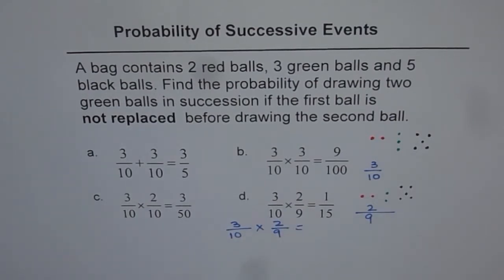So that is the answer. Three out of ten times two out of nine. That is option D. Product of these two, which is one over 15. So that is how we get the answer.